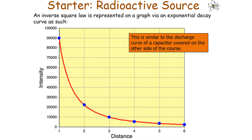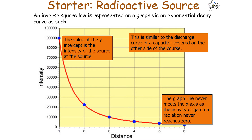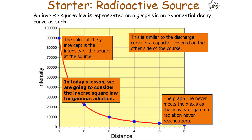An inverse square law relationship is represented on a graph via an exponential decay curve. This is actually similar to the discharge curve of a capacitor covered elsewhere in this course. The value at the y-intercept is the intensity of the source, and the graph line never meets the x-axis as the activity of gamma radiation never reaches zero.